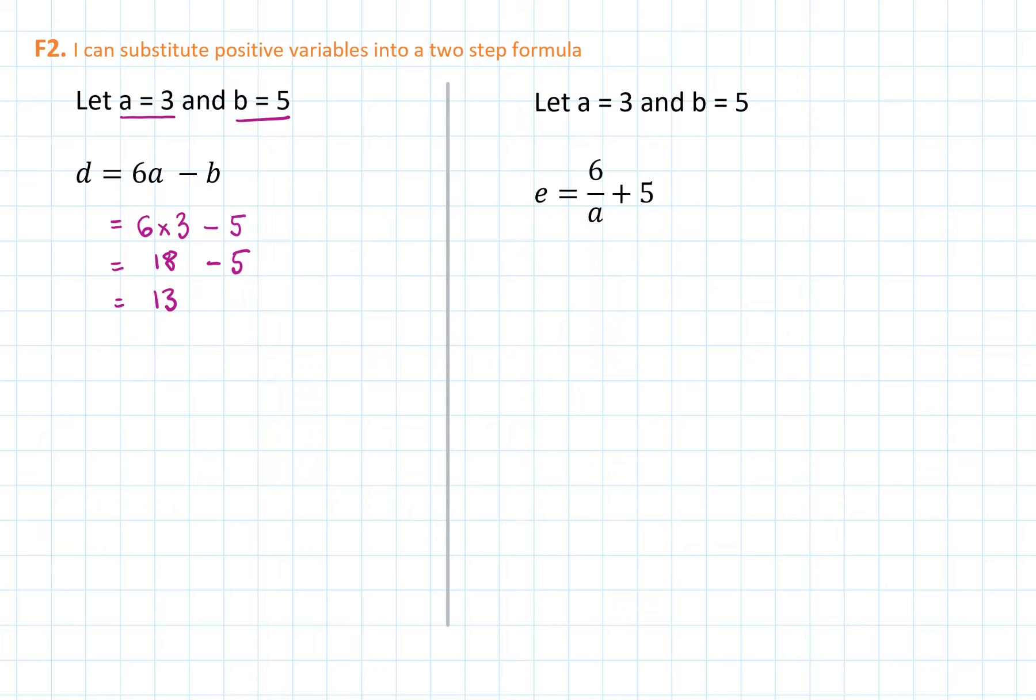If we look at another example, where a is 3, b is 5, but our formula is now e equals 6 over a plus 5. Remember that 6 over a just means 6 divided by a. Let's see what happens. If we substitute,